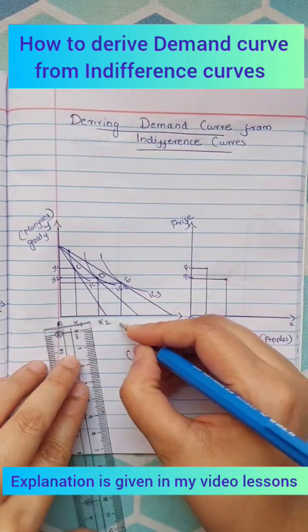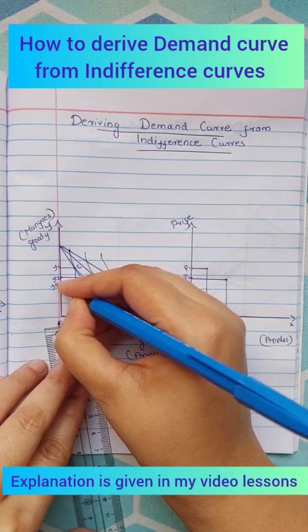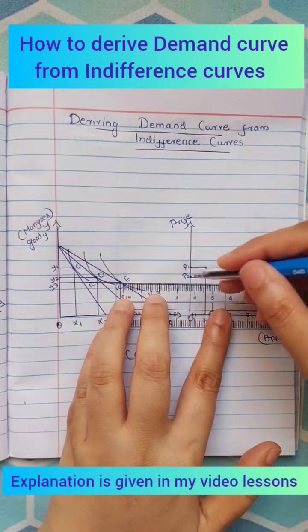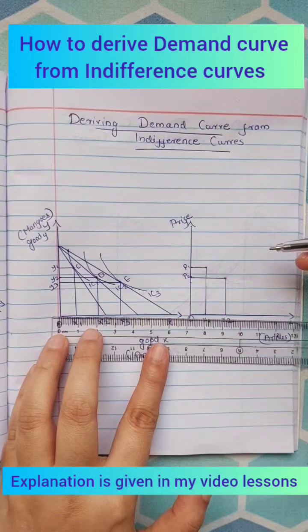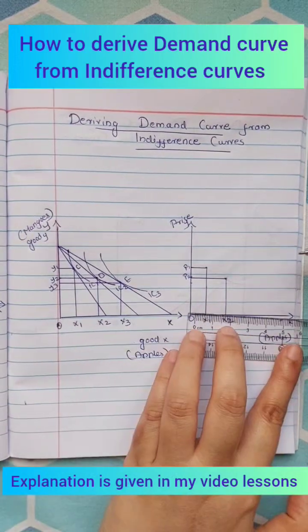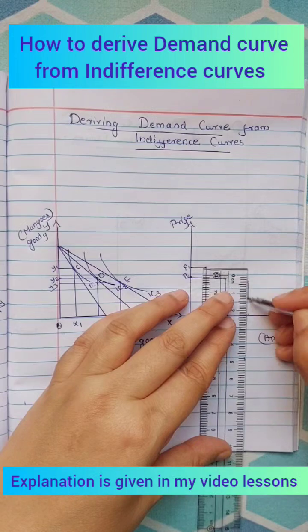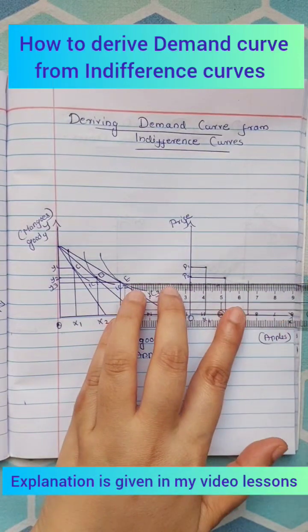More apples and less mangoes. We plot the new price P3 and new quantity x3 in figure 2 to get the third point on the demand curve.